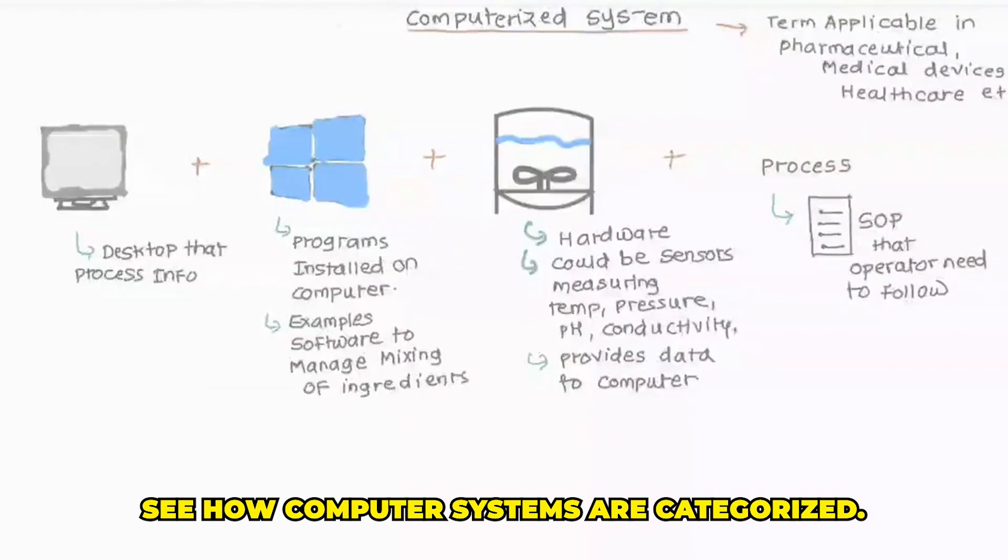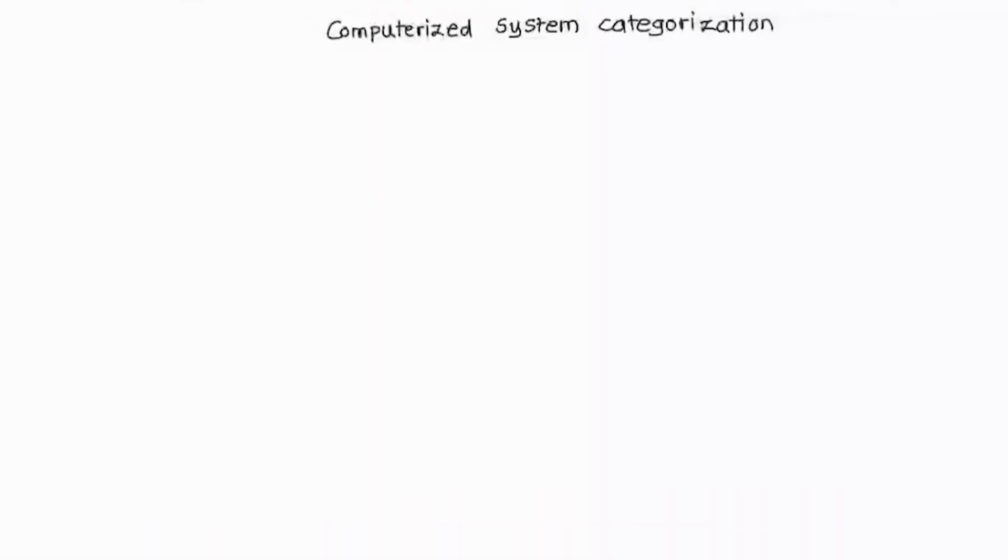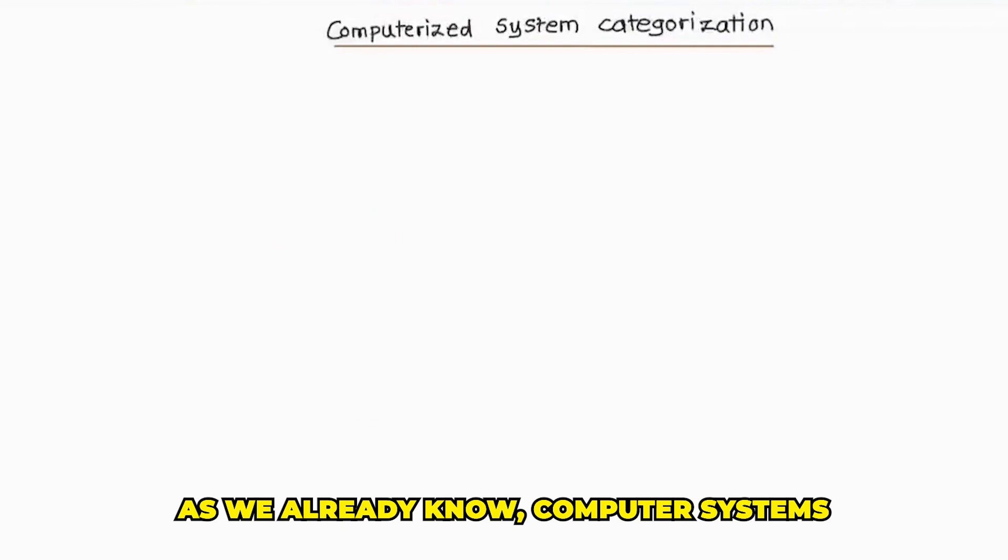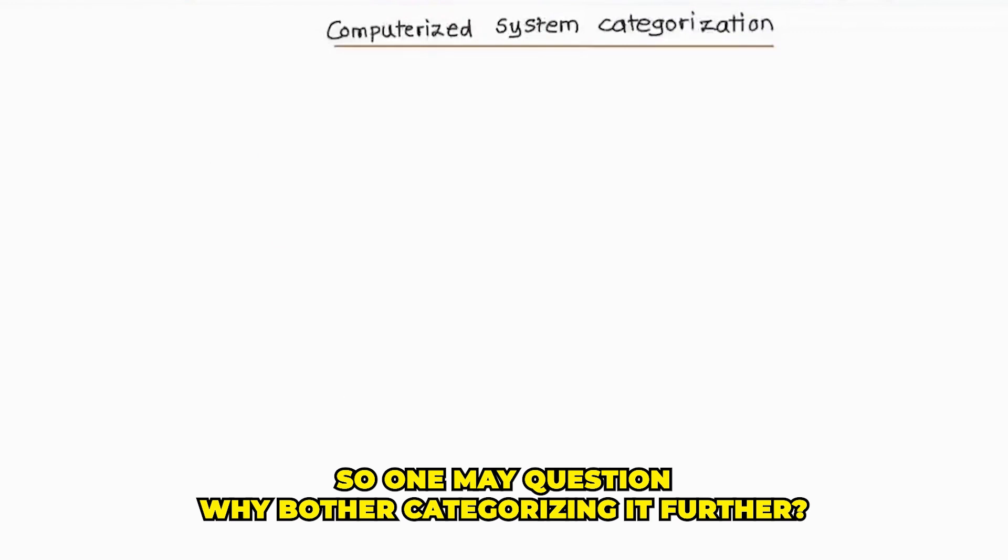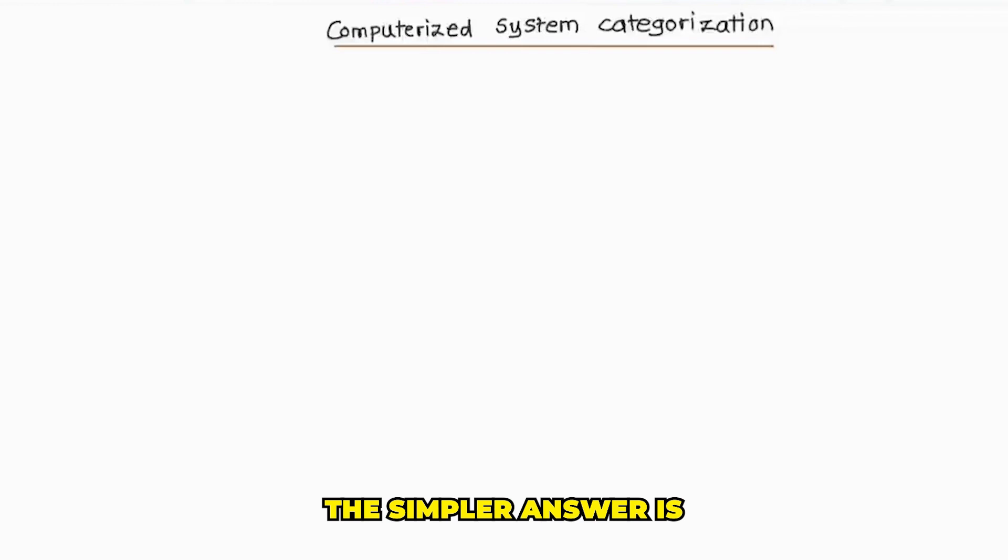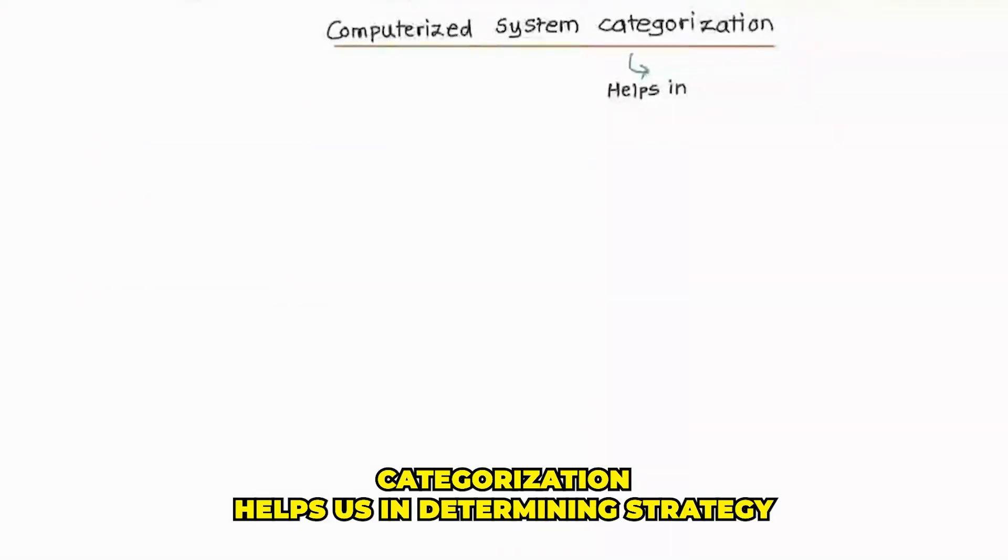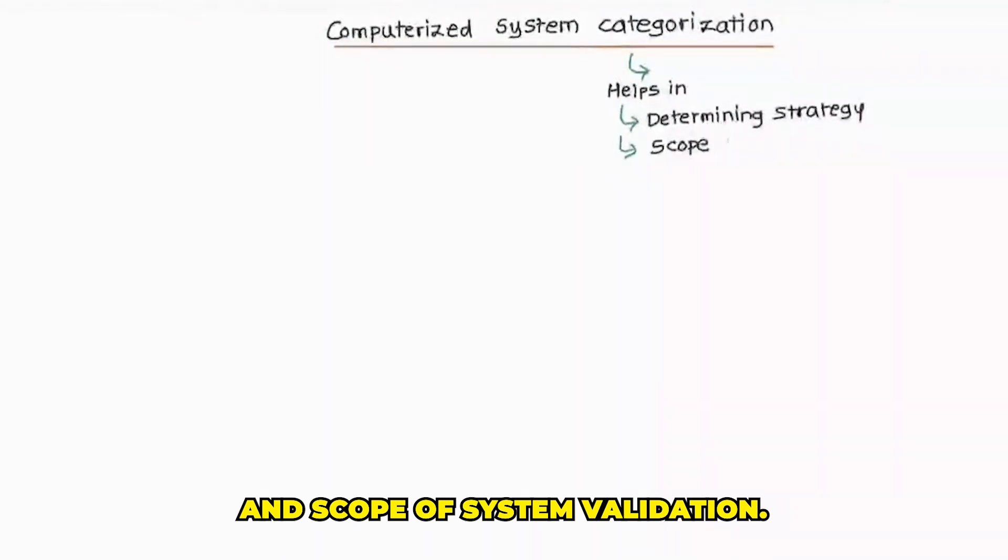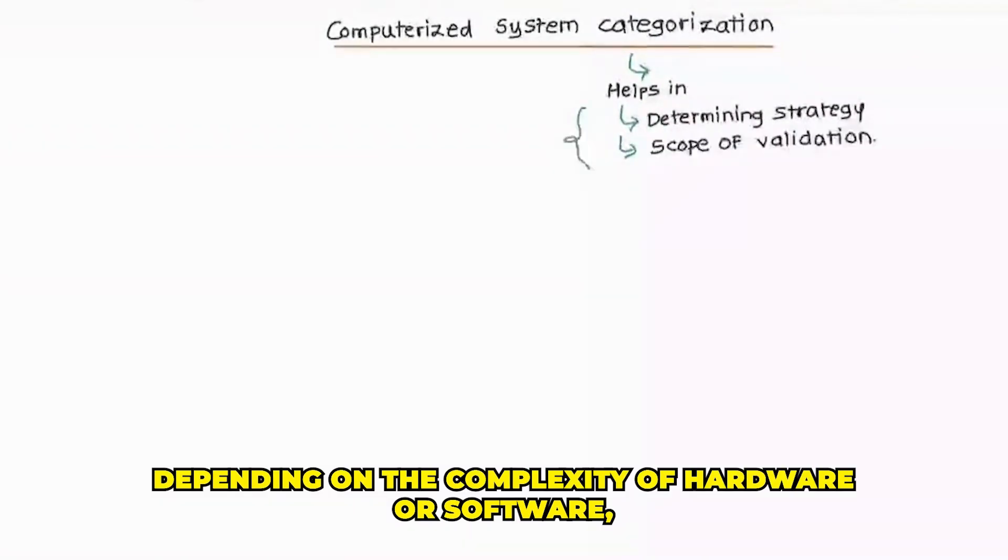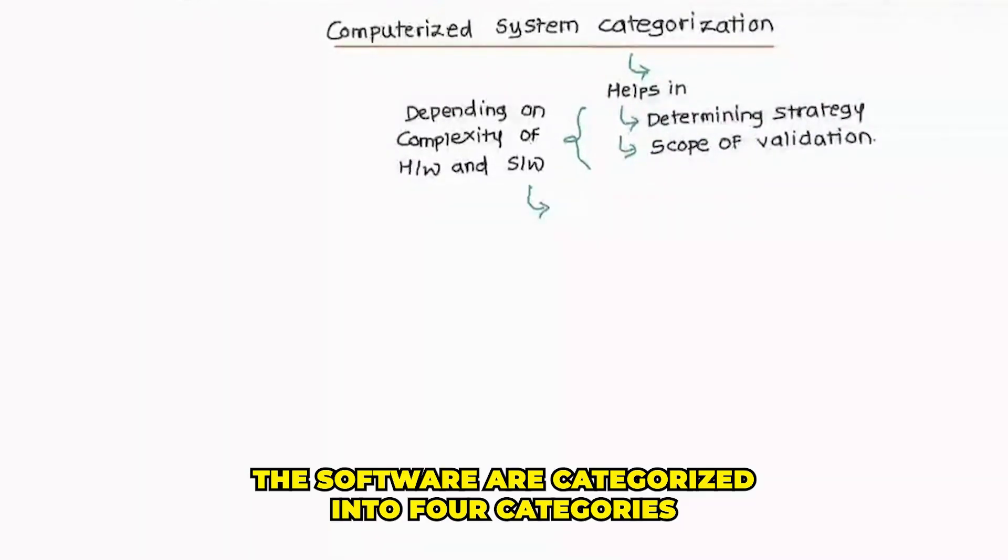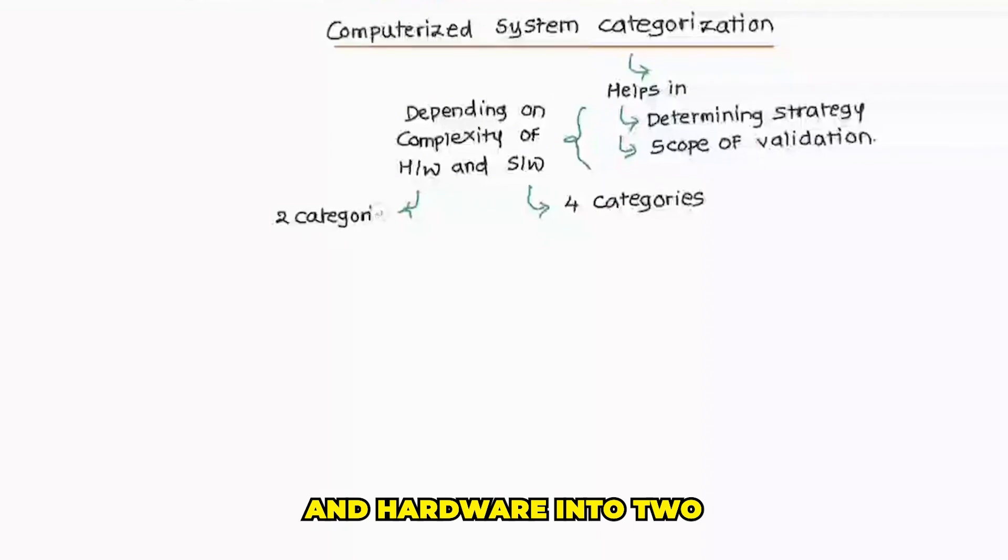Now let's see how computerized systems are categorized. As we already know, computerized systems include softwares, hardwares, and processes. One may question, why bother categorizing it further? The answer is, categorization helps in determining strategy and scope of system validation, depending on the complexity of hardware or software. Softwares are categorized into four categories and hardware into two, based on GAMP 5 guidelines. In this video, we are only going to focus on software categories.